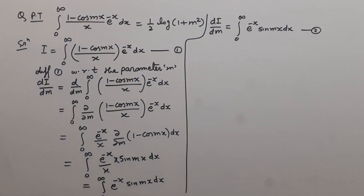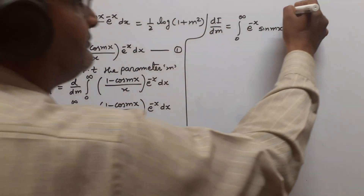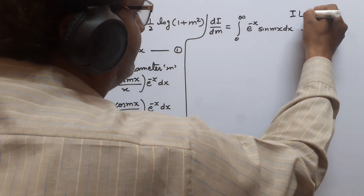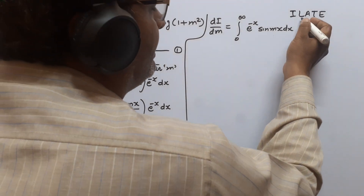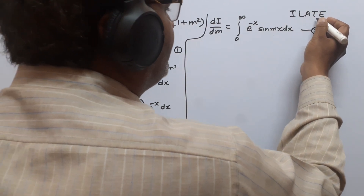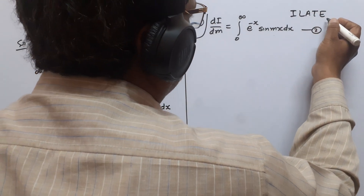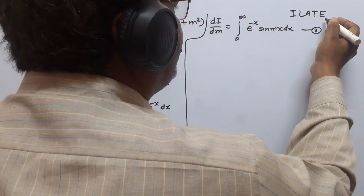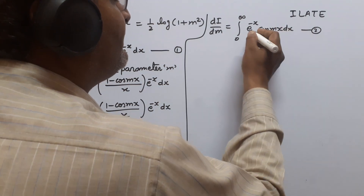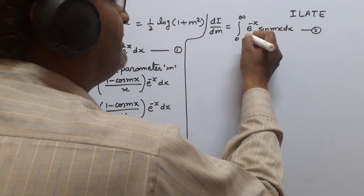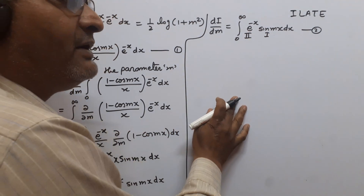Now we integrate e^(-x) sin(mx) using ILATE: I is inverse, L is logarithmic, A is algebraic, T is trigonometric, E is exponential. We suppose sin(mx) is the first function and e^(-x) is the second function, and use integration by parts.